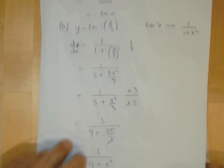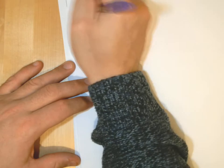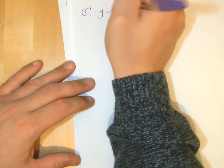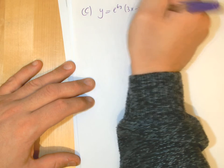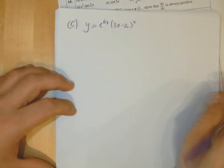So next part then, part C. We've got a quotient, no, we've got a product in part C.